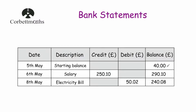Here we've got an example of the beginning of a bank statement. We've got five columns: date, description, credit, debit, and balance. The credit, debit, and balance all have the pound sign, so any numbers below in those columns are all in pounds.